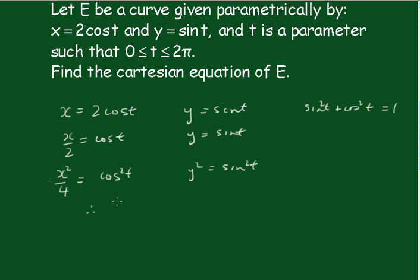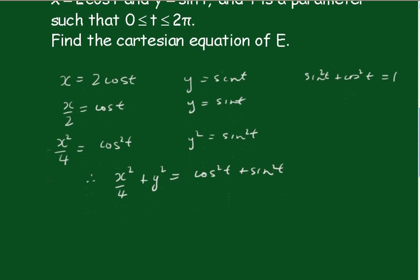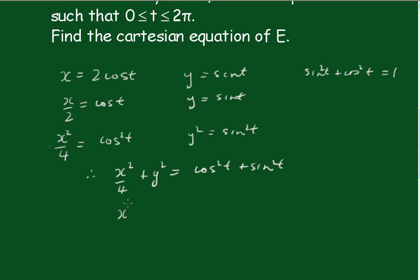Therefore, if I add these two together, x squared on 4 plus y squared must be equal to cos squared t plus sin squared t. So now we have the Cartesian equation equal to 1.